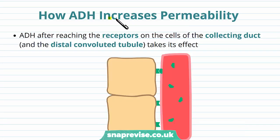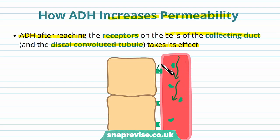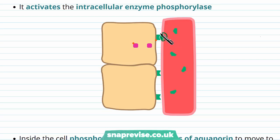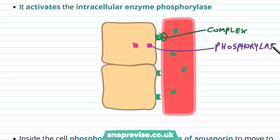So how does ADH actually increase the permeability of these collecting duct cells to water? The first step is that ADH, after travelling via the blood, reaches its receptors on the basal side of the collecting duct cells and part of the distal tubule. Once the ADH and the receptor have bound together to make a complex, an enzyme inside the cell called phosphorylase becomes active. This enzyme removes a phosphate group from a protein, and the interaction of receptor and hormone makes this enzyme active.